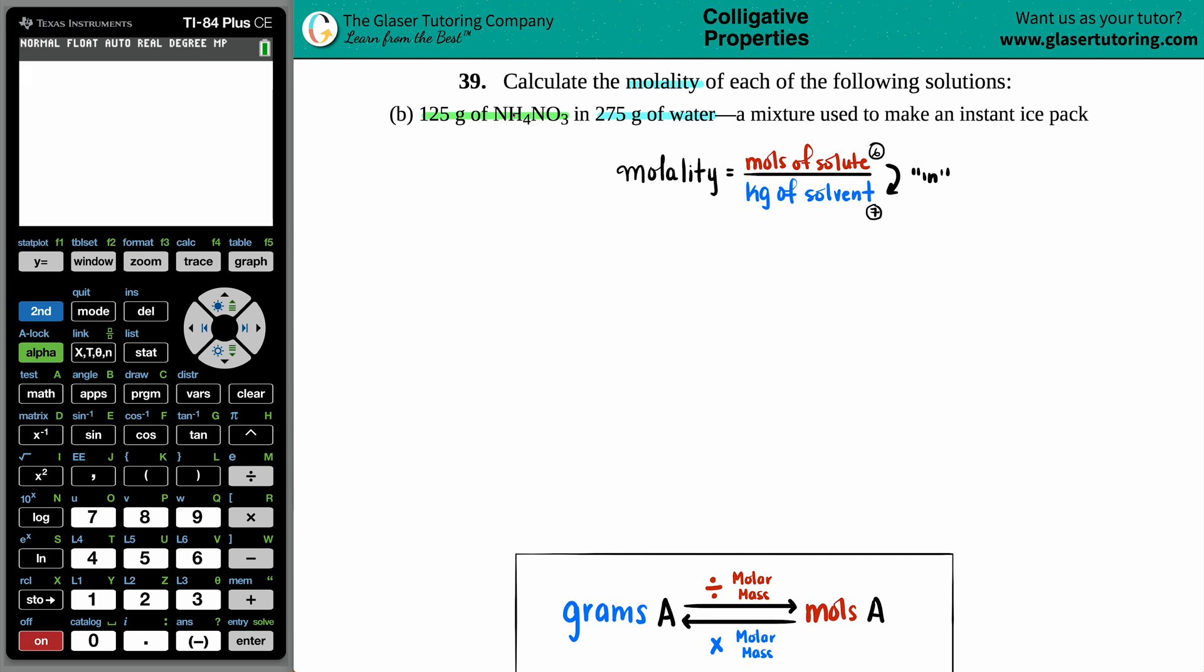Now, since they told me that the NH4NO3 was being dunked in the water, the solute always goes in the solvent, the NH4NO3 has to be the solute, and the water has to be the solvent. Now, since we compartmentalized which one is a solute, which one is a solvent, we could go to their correct units.